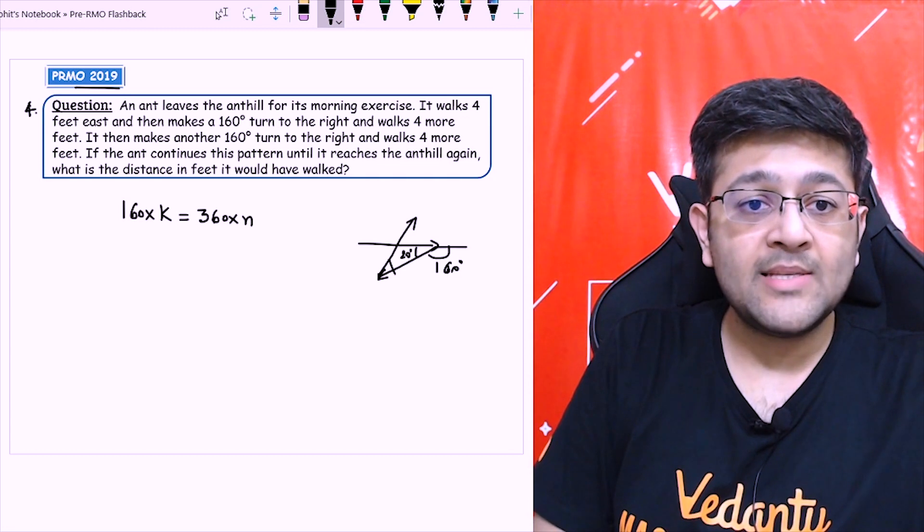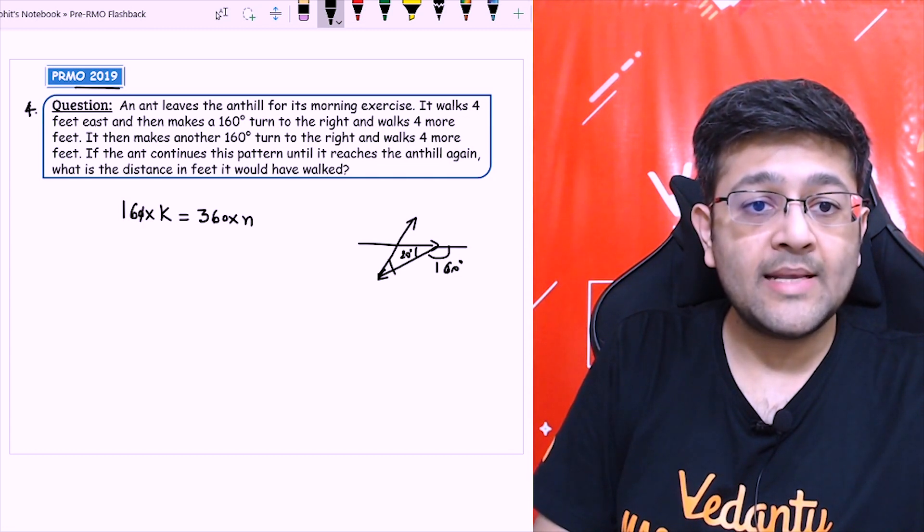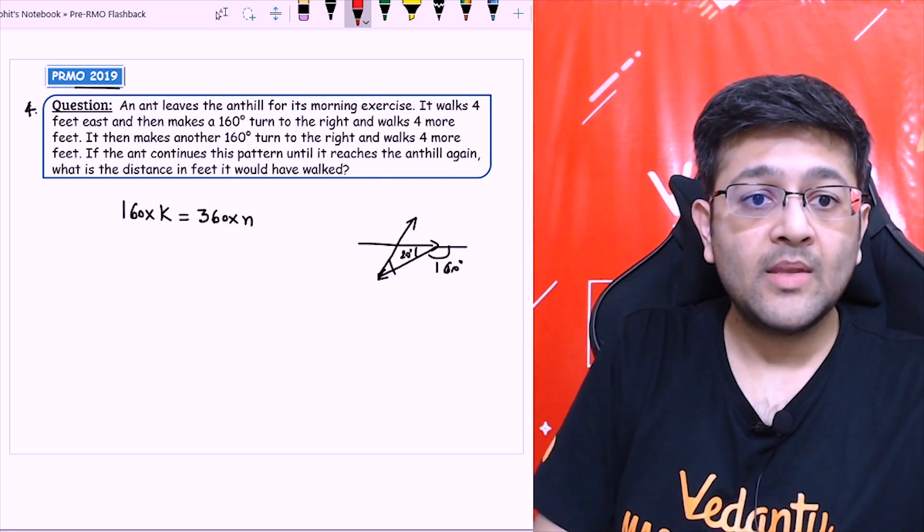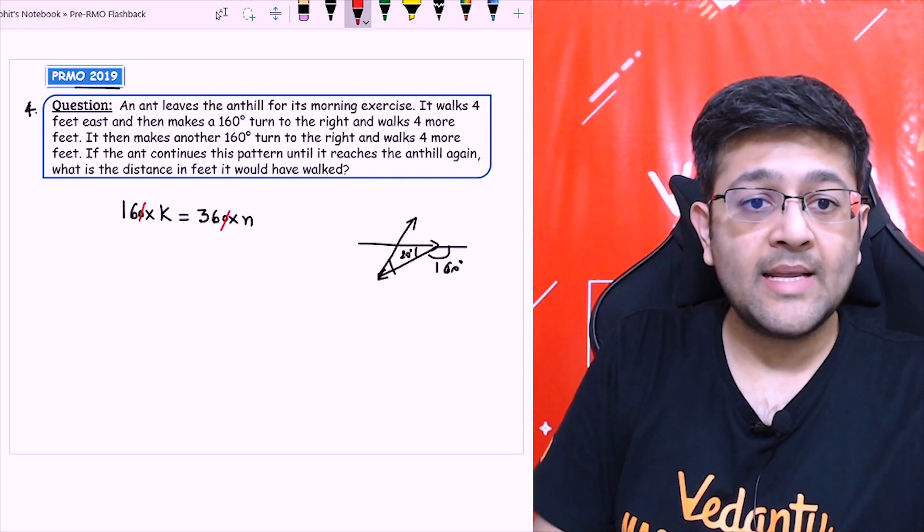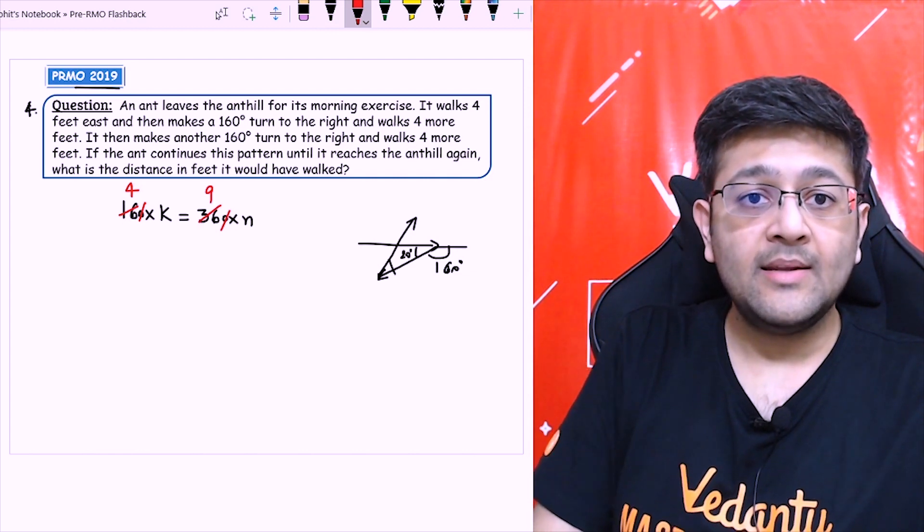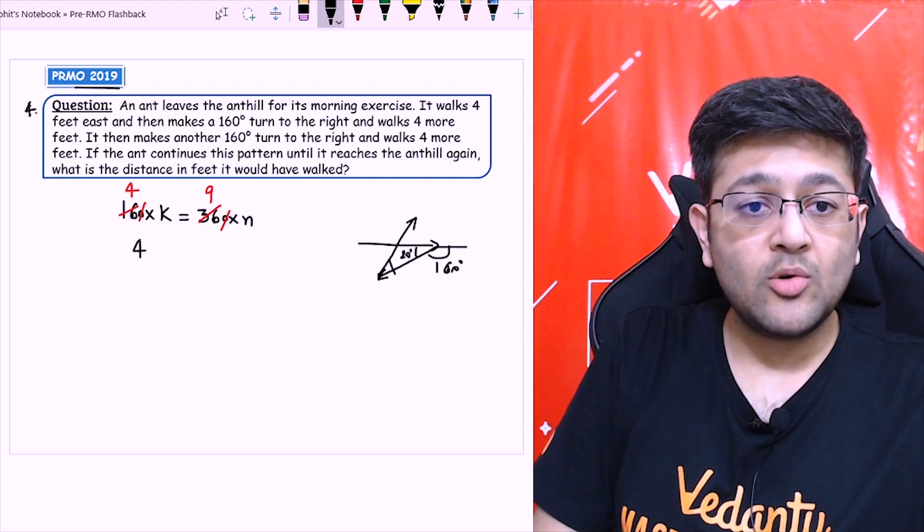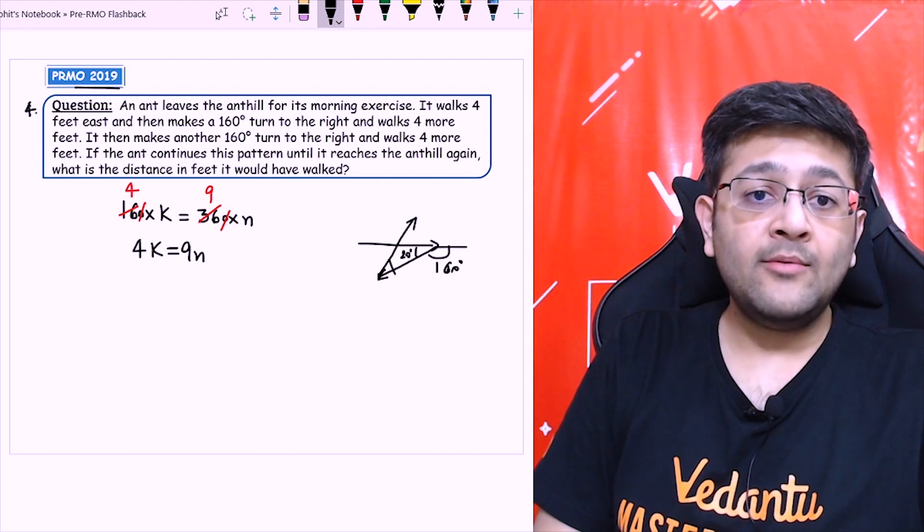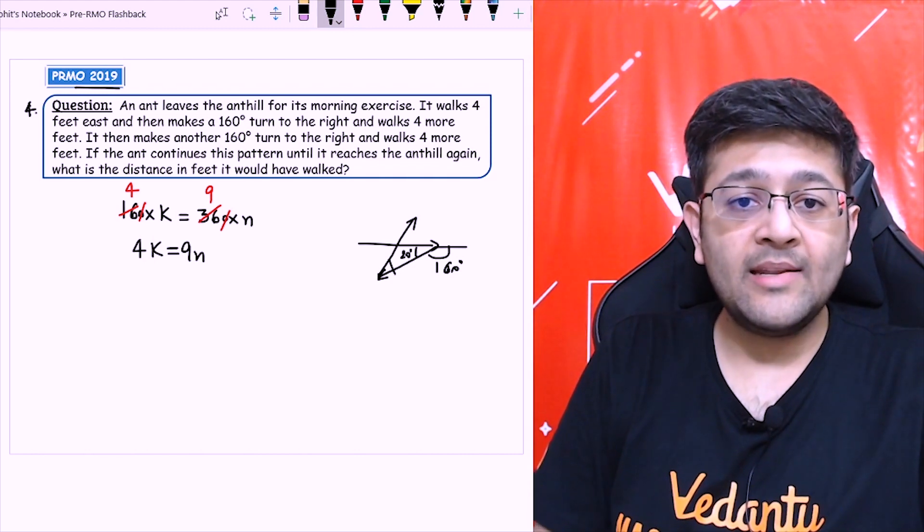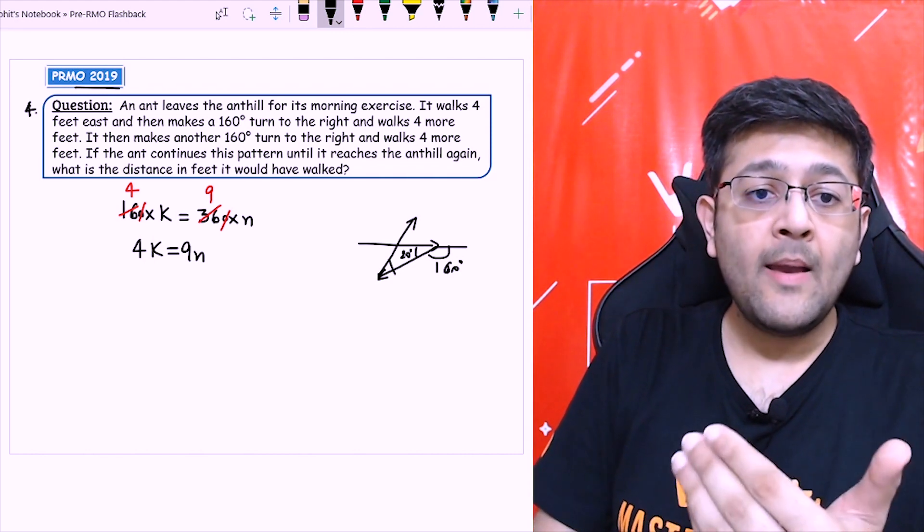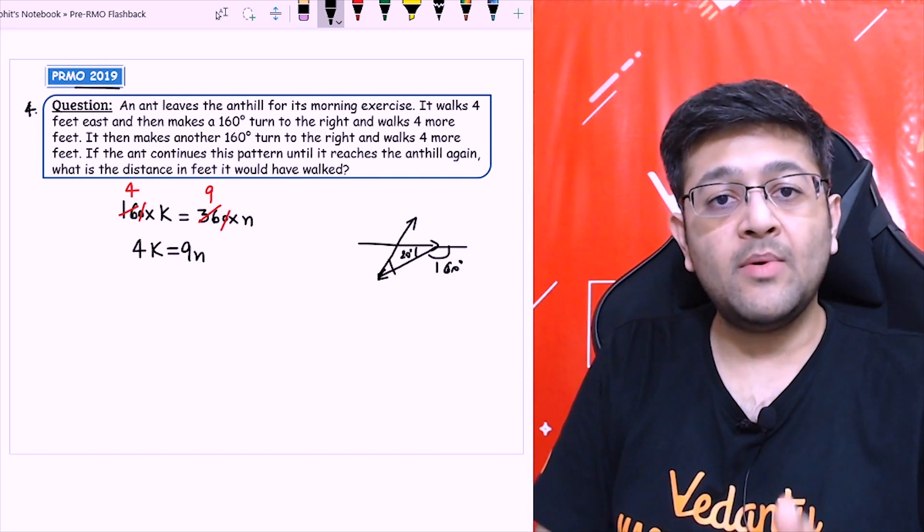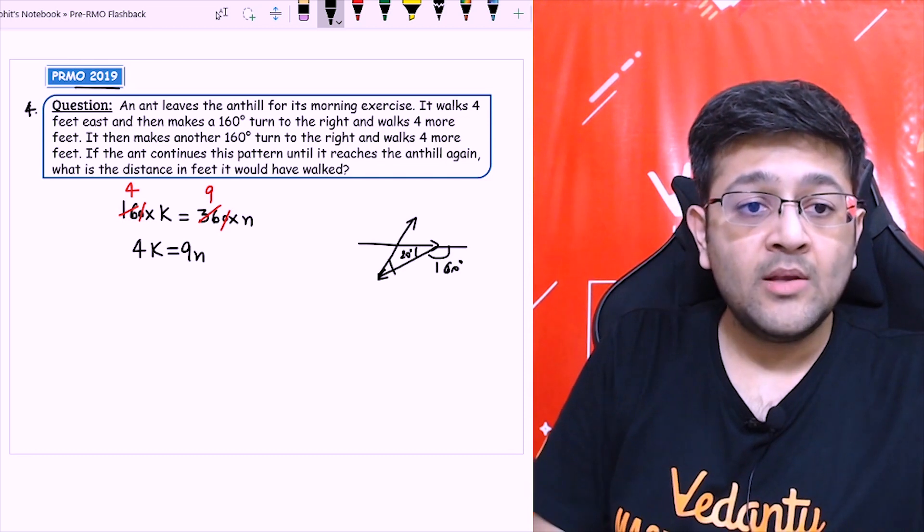Let's solve it a bit. So 160 and 360, 0 will get cancelled. Then 16 will cancel with 4, 36 will cancel with 9. So it comes out to be 4k equal to 9n. We have to find for the first time when it comes to the anthill again. That means minimum value of k and n I have to find.